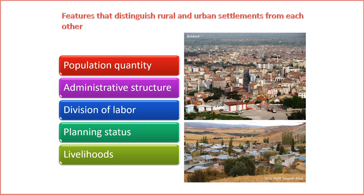2. Administrative Structure. The administrative structure plays a pivotal role in distinguishing between rural and urban settlements. Urban areas tend to have more complex and centralized administrative systems, reflecting the diverse needs of a larger populace. In contrast, rural areas often feature simpler, decentralized administrative structures aligned with the smaller community size. 3. Division of Labor. Another crucial aspect is the division of labor. Urban areas showcase a higher degree of specialization and diverse professions due to varied economic activities. In rural settings, there is often a more traditional and self-sufficient division of labor, with community members engaged in a variety of roles to sustain local needs.